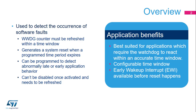The Window Watchdog is used to detect the occurrence of software faults. It can be programmed to detect abnormally late or early application behavior, and is best suited for applications required to react within an accurate timing window. Once enabled, it can only be disabled by a device reset. An early wake-up interrupt can be generated before a reset happens to perform a system recovery or manage certain actions before a system restart.